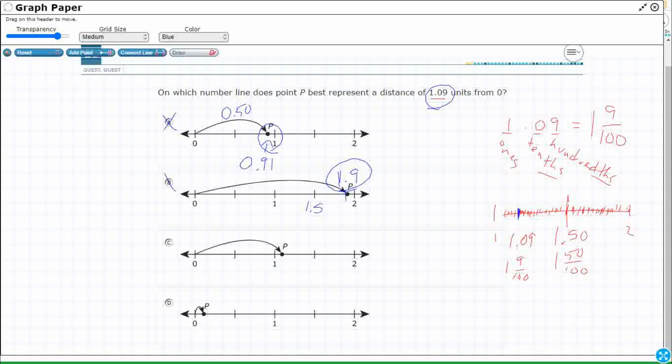So look at C. So there we go. Look how close it is to 1. And that does look pretty good, right? Here's my 1.50. So yeah, this 1.09 makes a lot of sense right here. So I can see that C being 1.09.